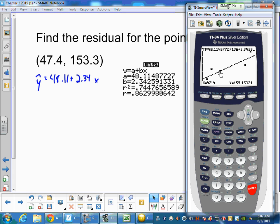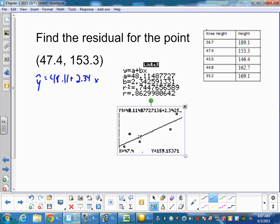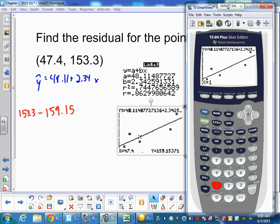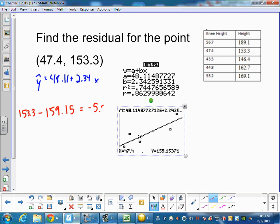So right here we should know that our residual should be negative because our point is below our line. So if I pull that out, what I want to do is take what we predicted, 159.15, and subtract that from our actual point, 153.3. And when I subtract those, I should get a negative answer, which is negative 5.58. And that is my residual.